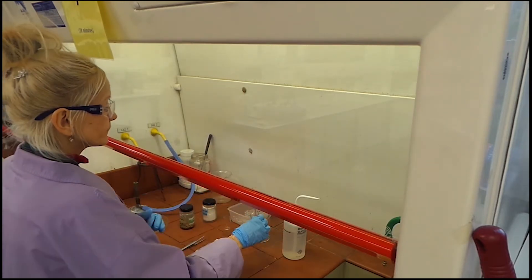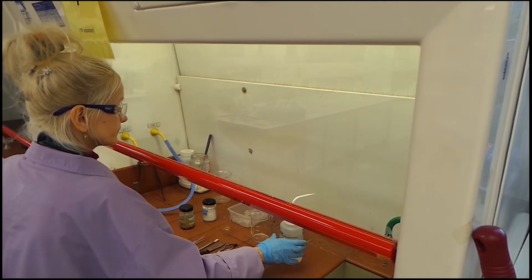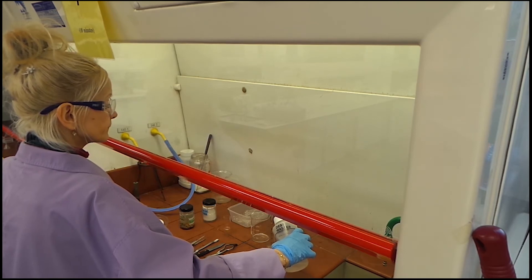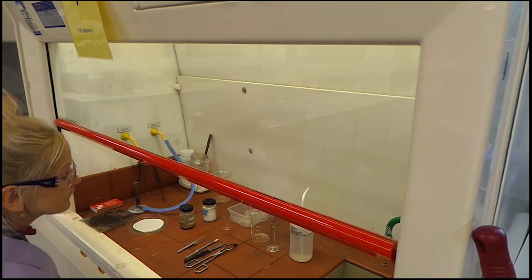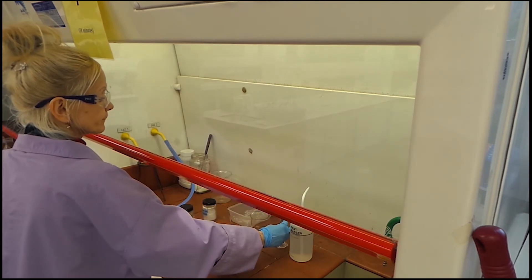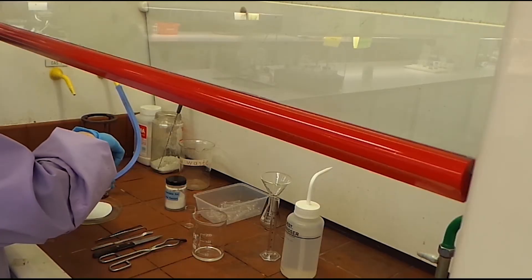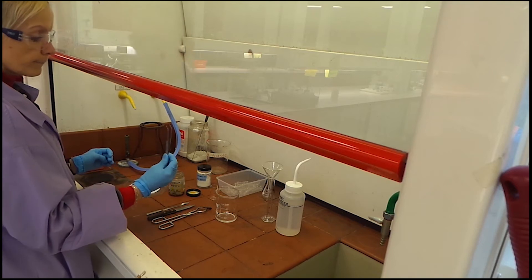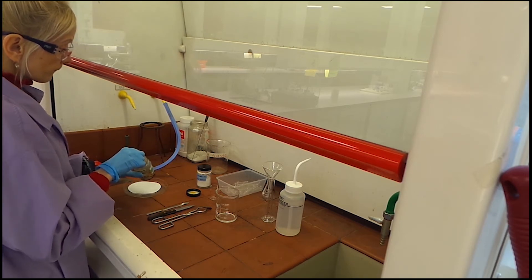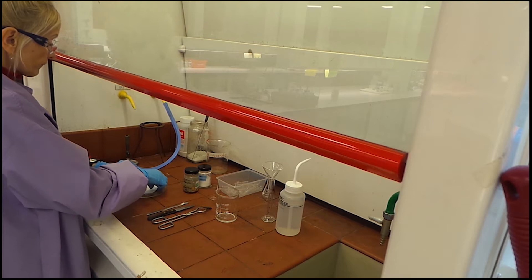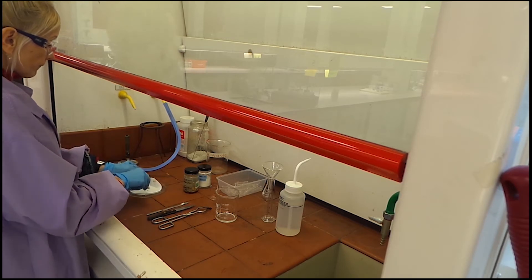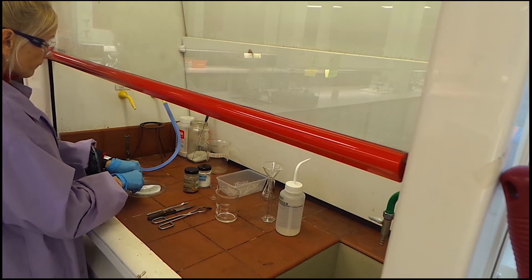Use a graduated cylinder to measure 10 ml of distilled water and then transfer it to a 250 ml beaker. Using a forceps, take a piece of sodium from the storage container and place it on a clean filter.